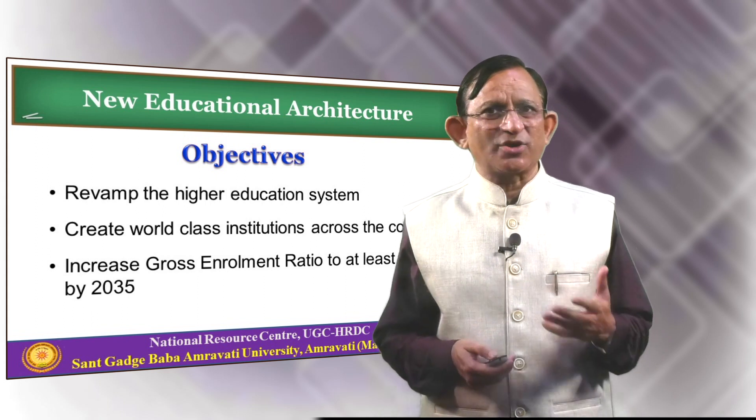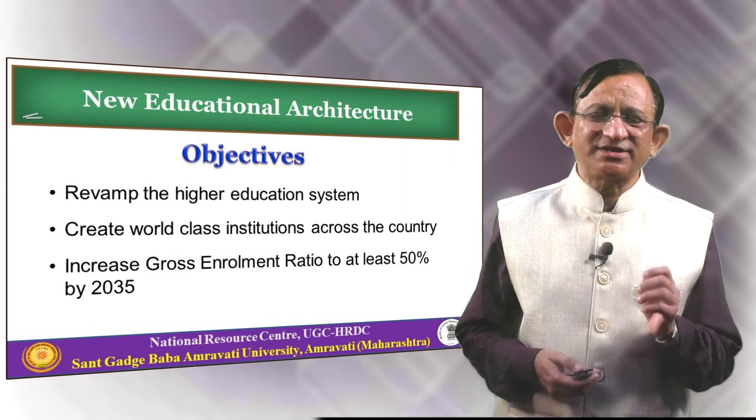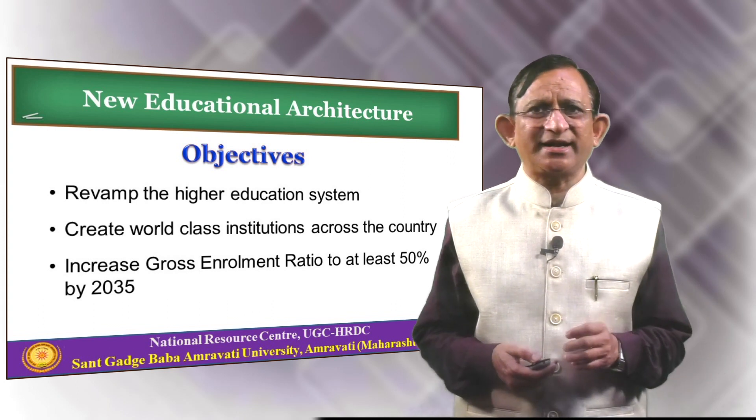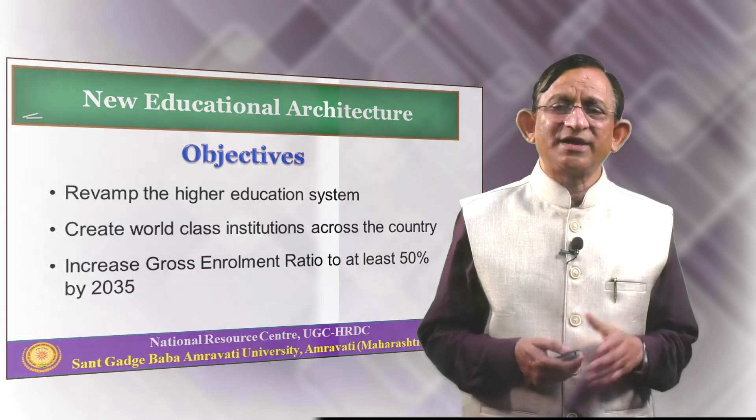When we talk about increasing gross enrollment ratio, it is not only quantitative expansion but qualitative expansion as well. Sustainable quality achievement is also the main focus in school and higher education, with integration between the two. The new vision and architecture for higher education has been evolved through vibrant, multidisciplinary discussion, which will result in creating multidisciplinary institutions.